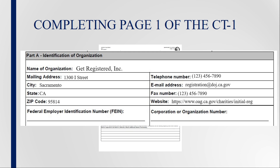If the organization has a website, provide the complete website address. Next, enter the Federal Employer Identification Number, also known as FEIN. All organizations must apply for an FEIN from the Internal Revenue Service, including organizations that have a group exemption or file group returns. If the organization is tax-exempt under a group ruling, please enter the group exemption FEIN or group number.